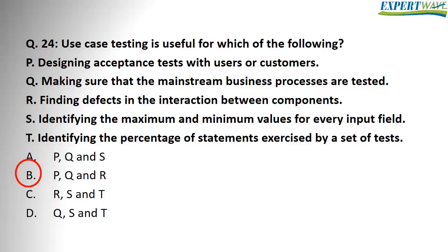To confirm our understanding, option Q should be correct — making sure that the mainstream business processes are tested. This is correct for use case testing. Identifying the percentage of statements exercised by a set of tests is wrong, as it's related to white box testing, not use case testing. So the final answer is B.